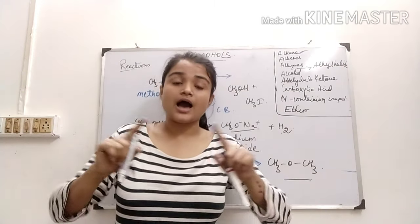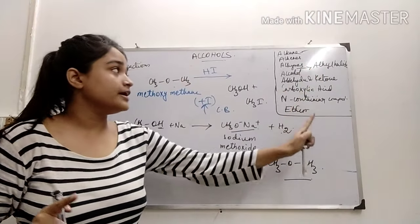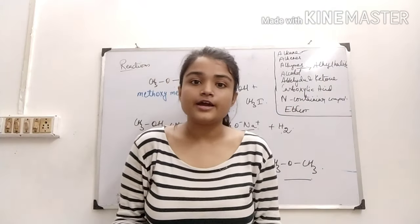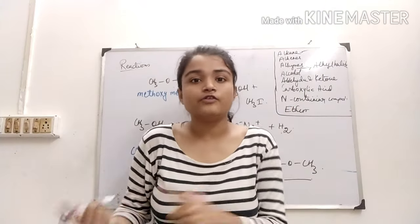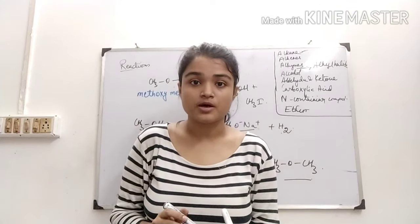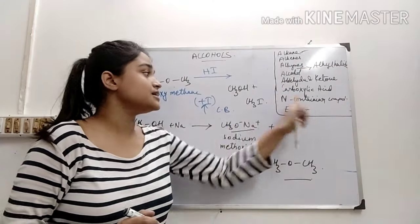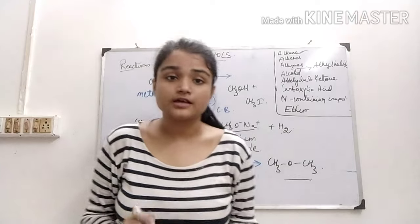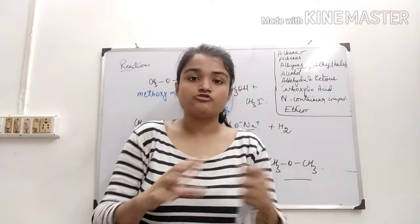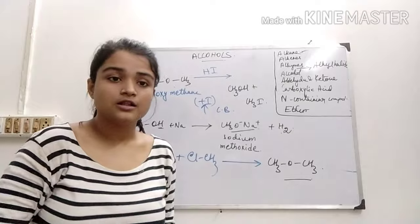So, you can see how we are learning all the conversions involving all the functional groups — starting from alkanes all the way to ethers. If I draw the concept map of an alcohol, we can see all these transformations together.